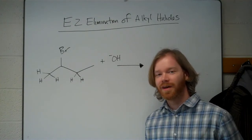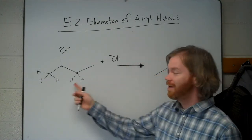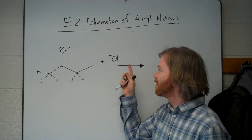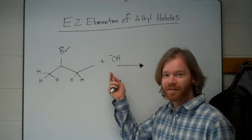In an E2 elimination mechanism, here we're looking at alkyl halides, an alkyl bromide in this case. We have the alkyl halide and a strong base hydroxide.